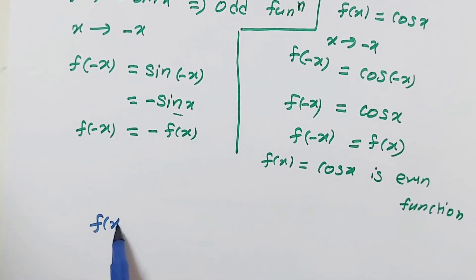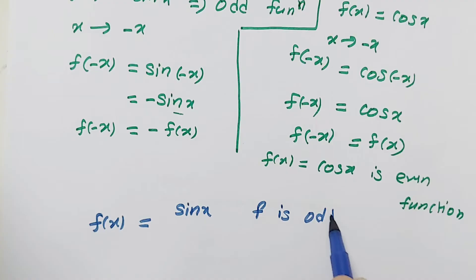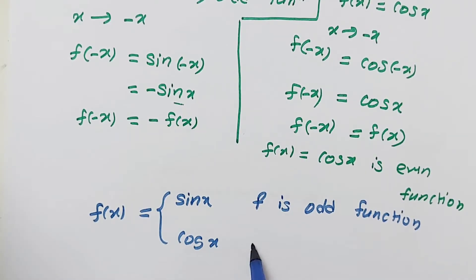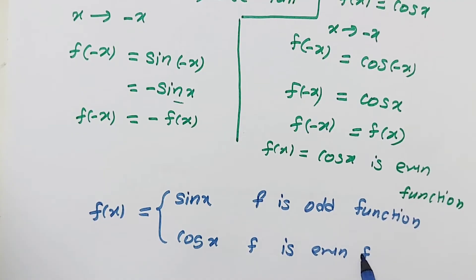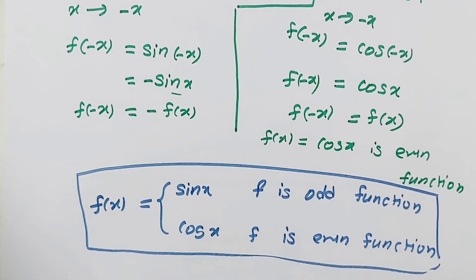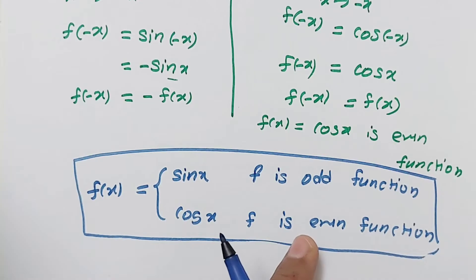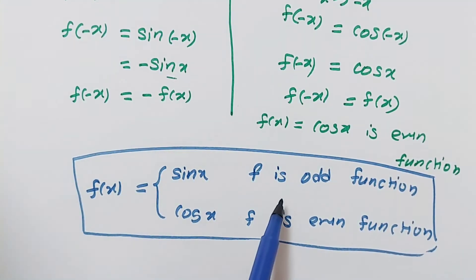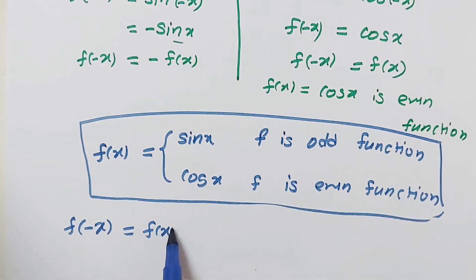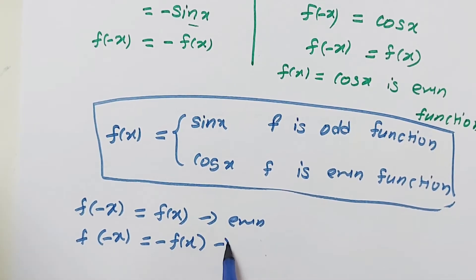So in trigonometry, sin is an odd function and cos is an even function. Here, odd and even correspond to the sign: when we replace x by minus x and get a minus sign outside, we say it is an odd function; when we get a positive, we say it is an even function. So f of minus x equals f of x means even, and f of minus x equals minus f of x means odd.